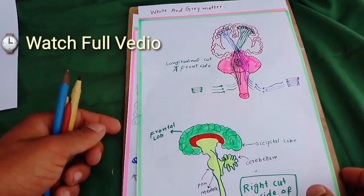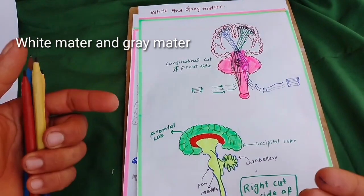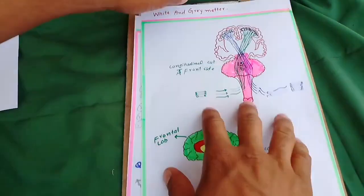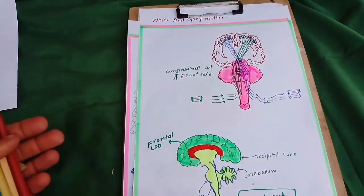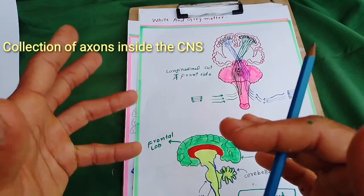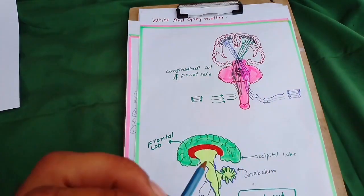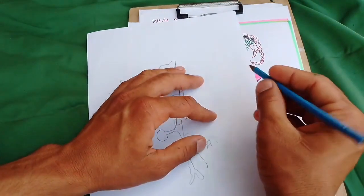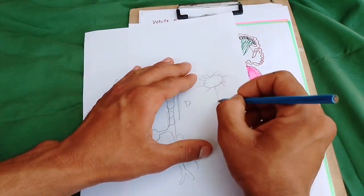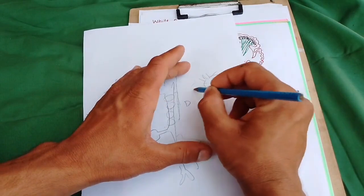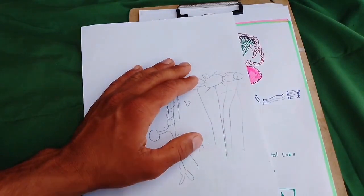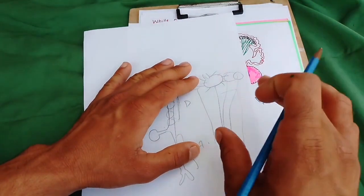Today we are going to talk about white matter and gray matter. White matter is defined as a collection of axons in the CNS — the central nervous system. As we know, there is the cell body, there are the dendrites, and a collection of axons is called white matter in the CNS.